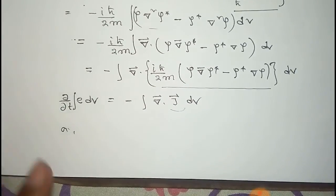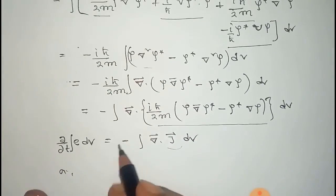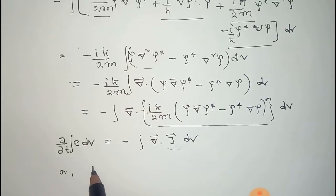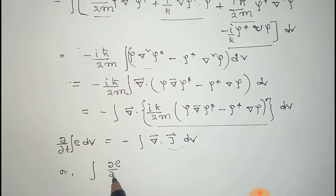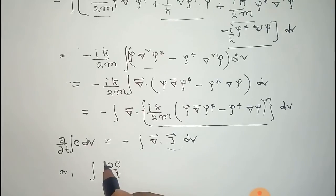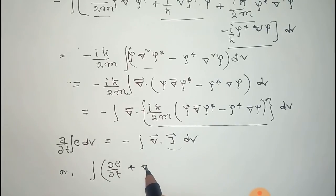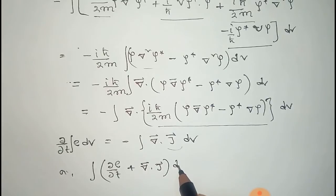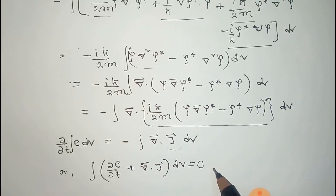From this we get that ∂/∂t of the integral of ρ dV equals minus the divergence of J dV. Using the divergence theorem, this gives us ∂ρ/∂t plus divergence of J equals zero, which is the continuity equation in quantum mechanics.